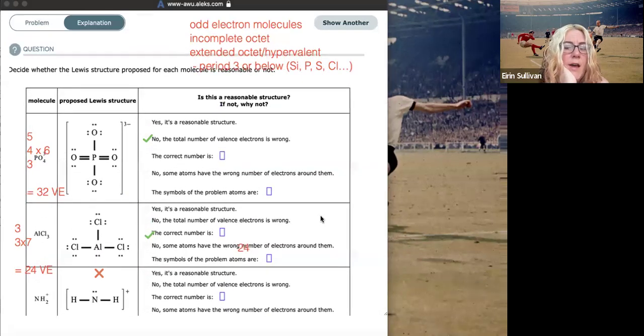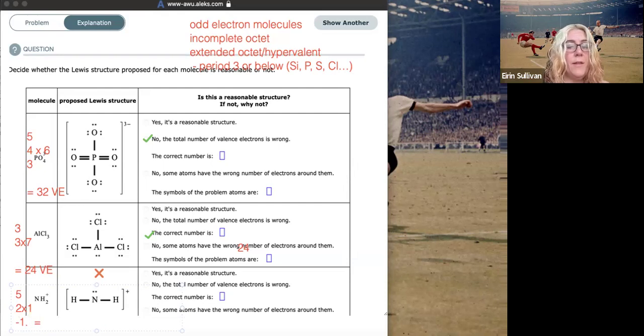NH2 plus. So if we tot up our valence electrons, nitrogen is in group 15, so it has five, and each hydrogen has one valence electron. It's got a plus one charge, which means it has lost an electron. So just remember if you've got a cation, you've got to subtract off an electron from the valence electrons. That's a timely reminder there. So five, six, seven minus one is six valence electrons.